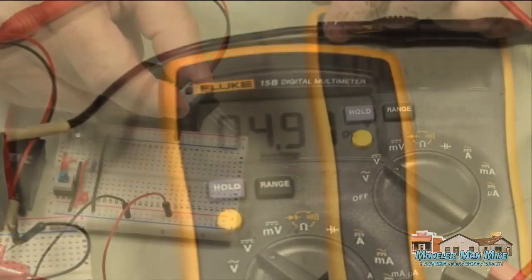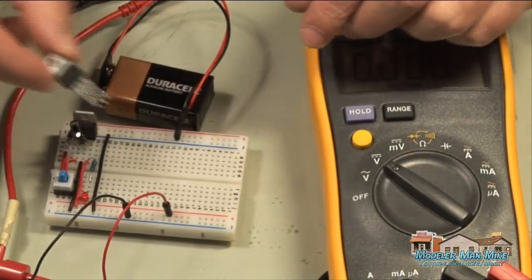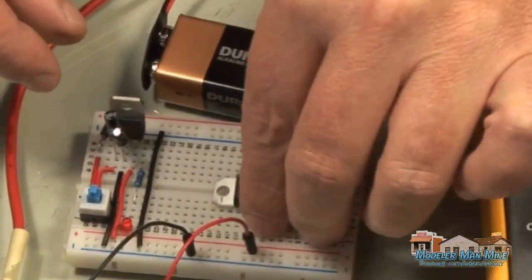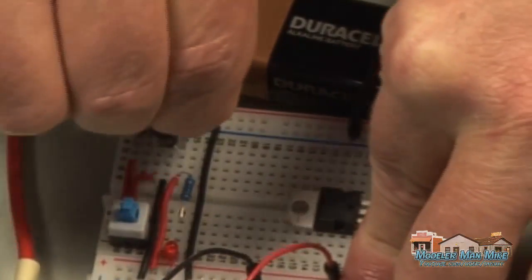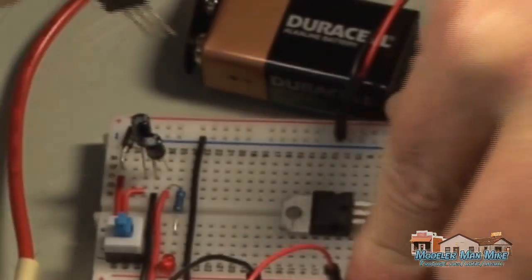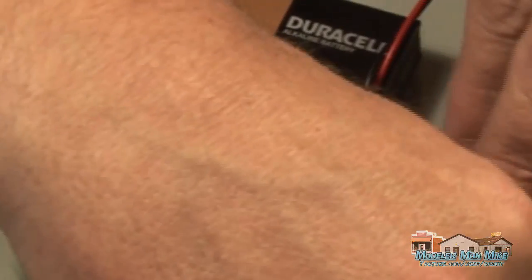Yeah, so top rail's 9 volts, bottom rail's 5 volts.